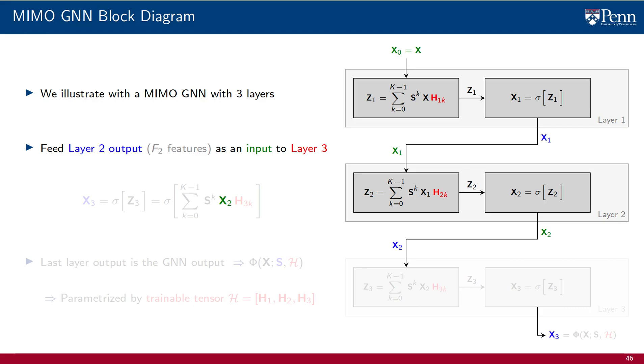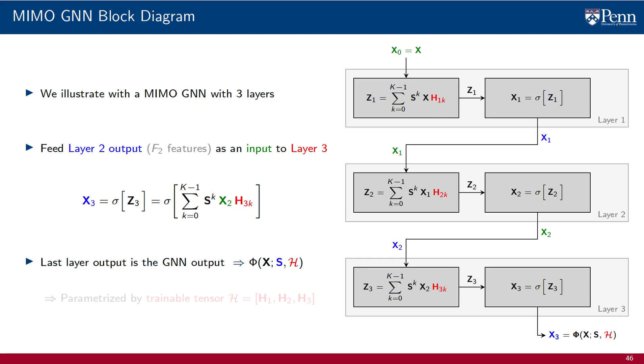The output of layer 2 is now fed as an input to layer 3, where it is processed with a MIMO filter with coefficients H3K to produce internal output Z3, which we process with a point-wise nonlinear function sigma to produce the signal X3. This completes layer 3. The signal X3 at the output of layer 3 is declared to be the output of the MIMO GNN. The output is parametrized by the filter tensor calligraphic H, grouping the MIMO filters of all layers. This is the trainable parameter of the MIMO GNN. The MIMO GNN is the workhorse of machine learning on graphs.